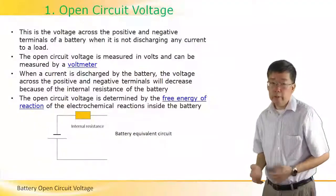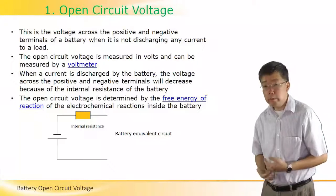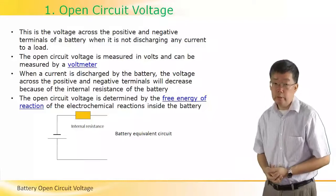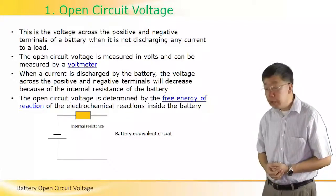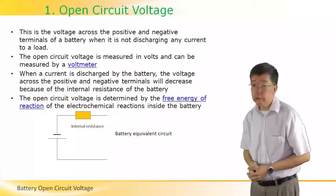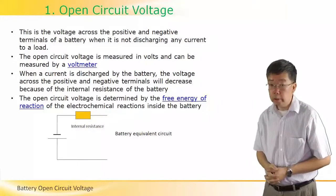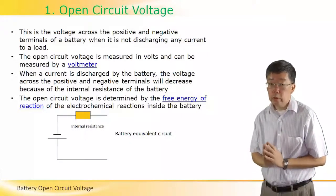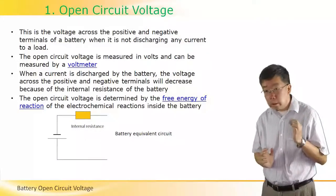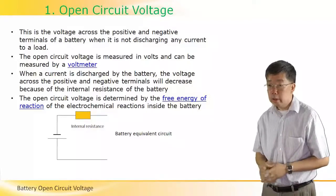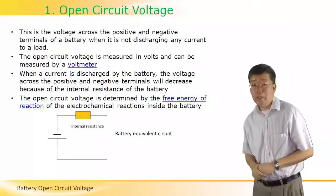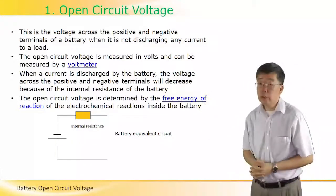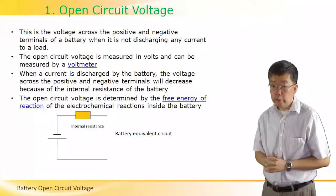In the remaining slides of this tutorial we will introduce several important characteristics of any battery. The first one is called the open circuit voltage. By definition this is the voltage across the cathode and the anode, that is the positive and negative terminals of the battery when it is not discharging any current.